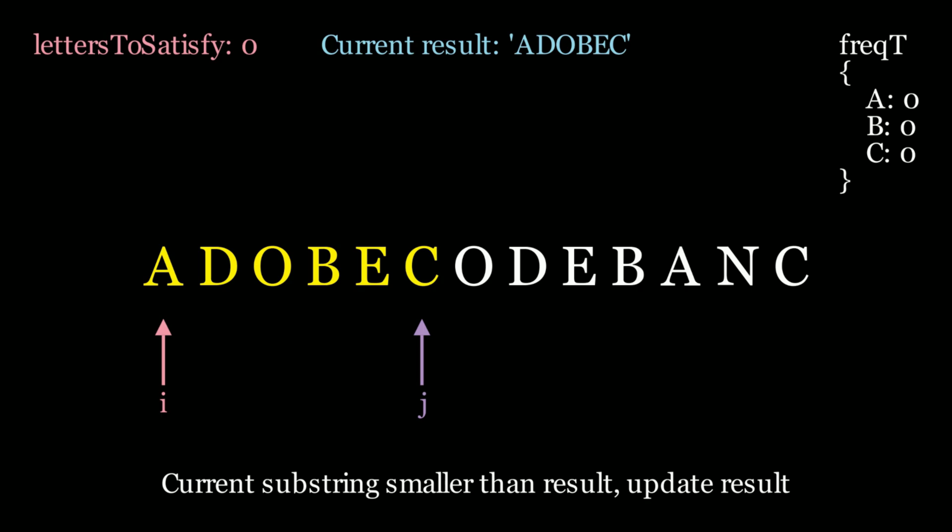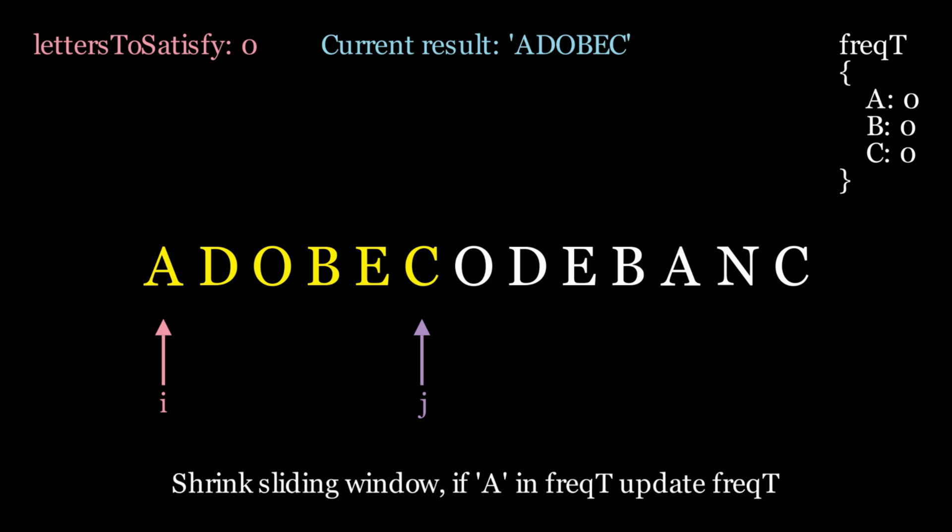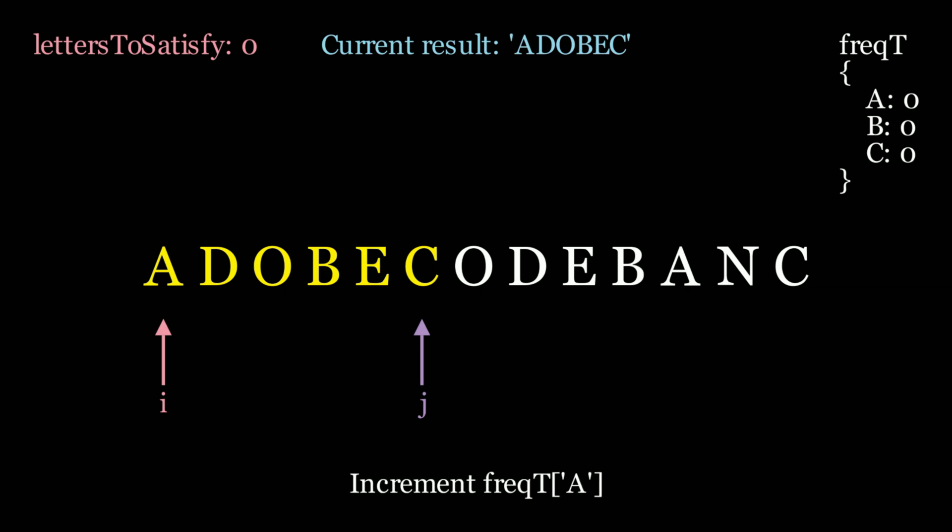Throughout the rest of the algorithm we'll try to see if we can find a smaller substring. We have to shrink the window — we found a solution, can we find an even better one? We need to move the i pointer. Before we move i, we need to increment back the value in the hash map. i is at the letter a. If I move i to d, we effectively lose a from our current substring, so we increment the value at a from 0 to 1 because we're giving up that element.